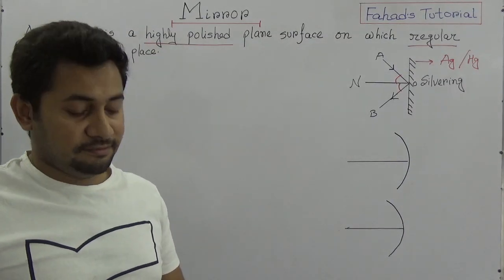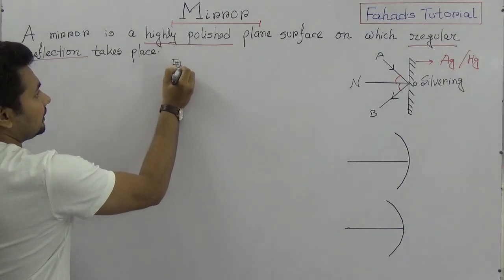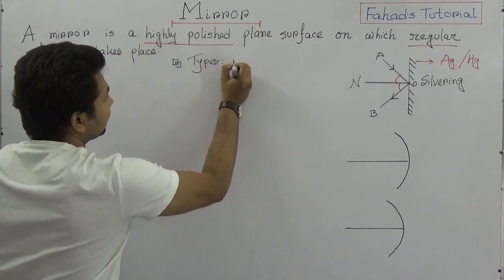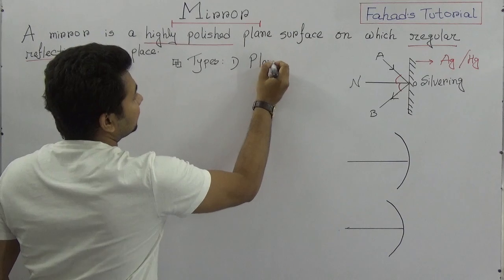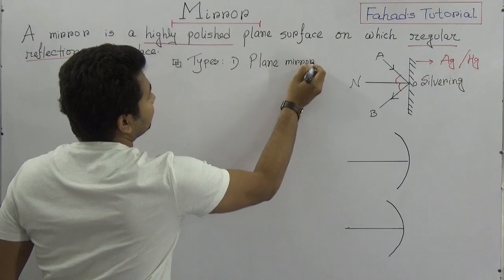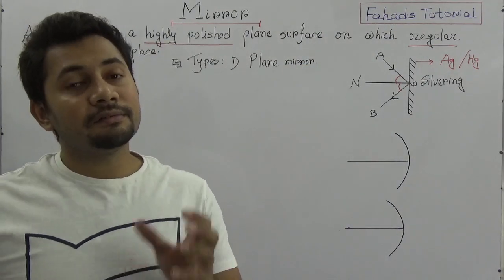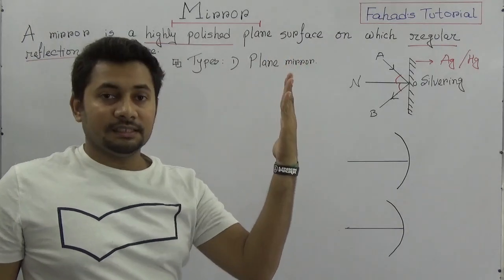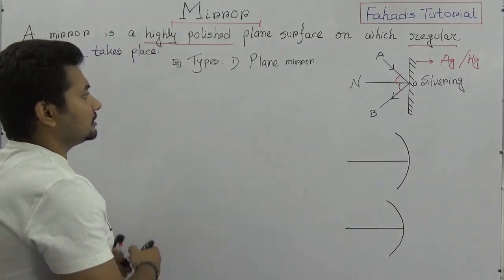How many types of mirrors are there? Simply, mirrors can be two types. Number one: plane mirror, where the surface is plain. In a plane mirror, regular reflections will take place. Number two is the spherical mirror.